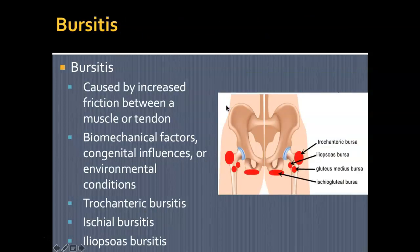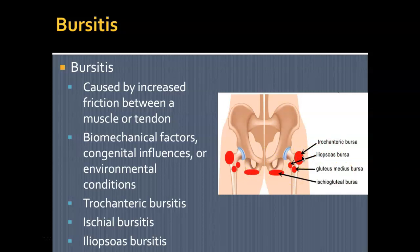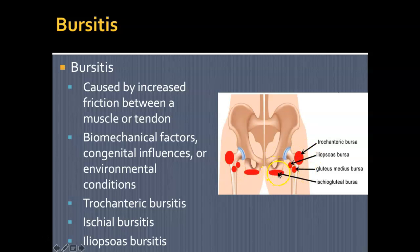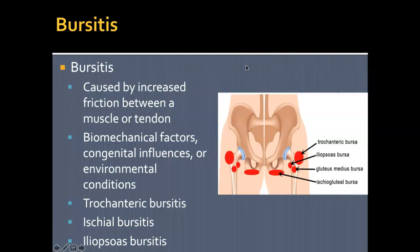There are many bursae about the hip, but trochanteric bursitis is the most common, caused by increased friction of the TFL-IT band junction over the greater trochanter. Biomechanical or congenital factors can also contribute. Secondary to trochanteric bursitis is ischial gluteal bursitis, which occurs most often in patients who sit for extended periods, particularly those with less padding in the gluteal region.